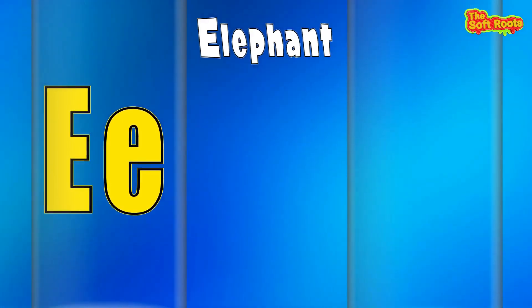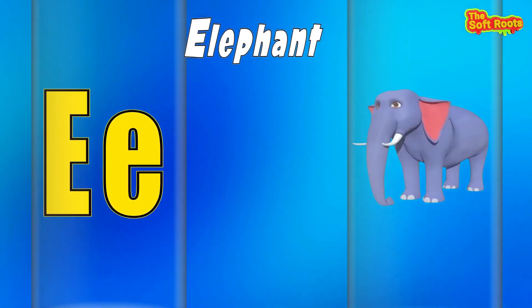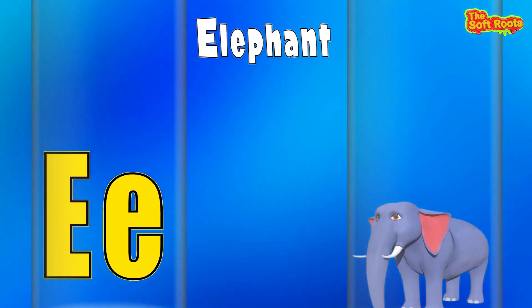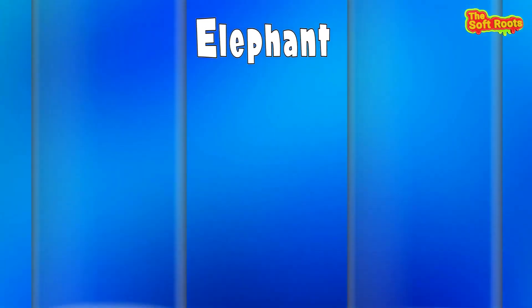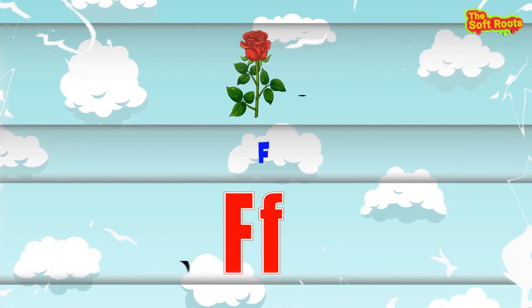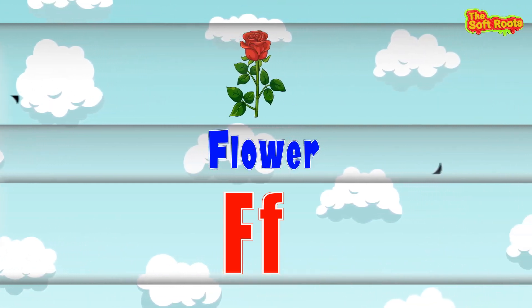E is for Elephant. F is for F-F-Flower, F-F-Flower.